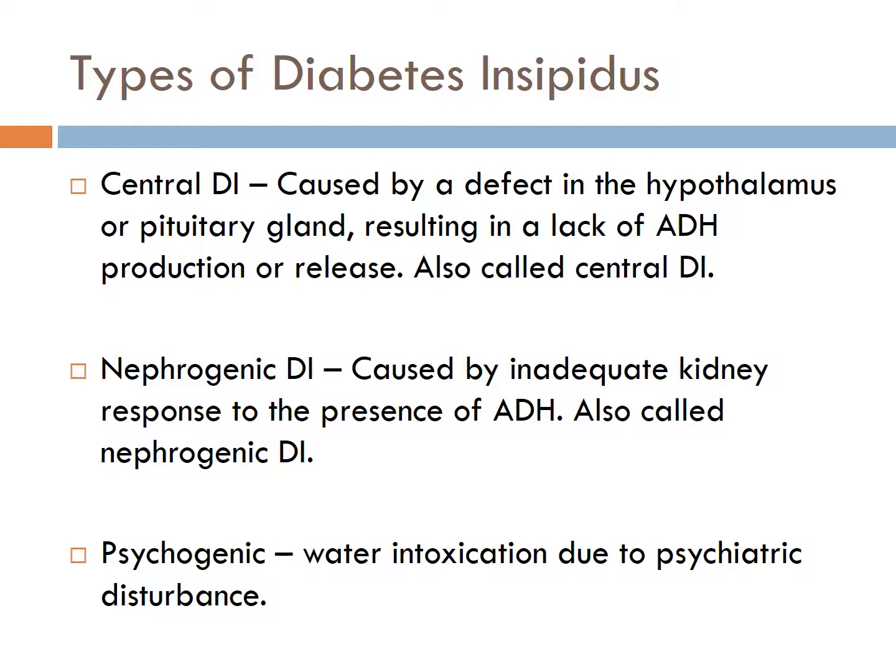The third type is psychogenic DI, which is rare. There is excessive water intake as in water toxicity, and there is usually a lesion in the thirst center or a psychiatric disorder.